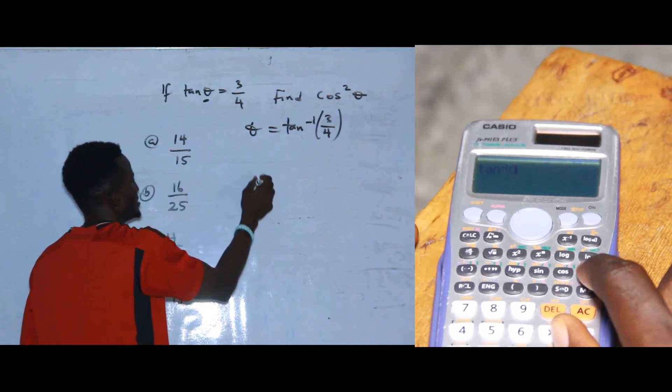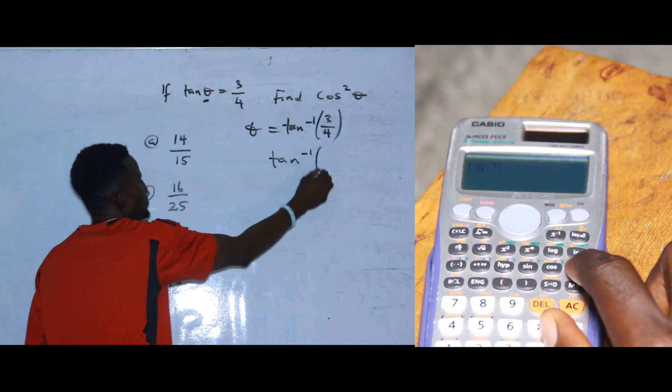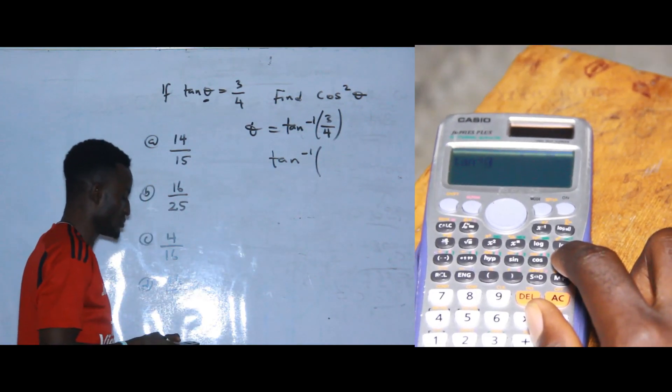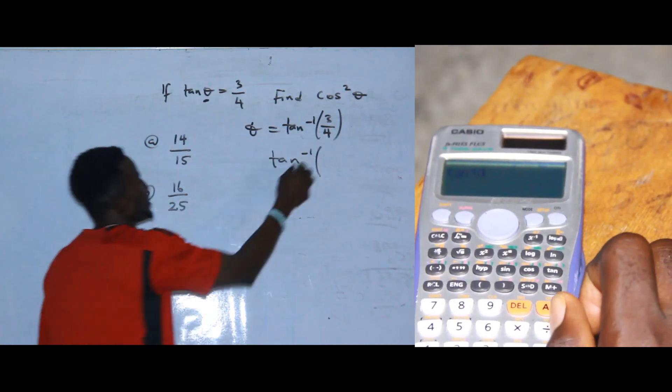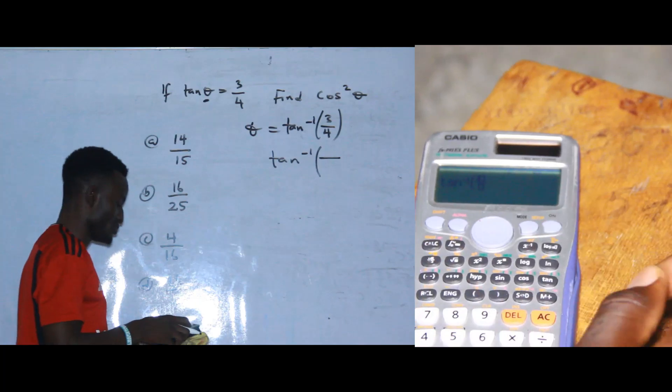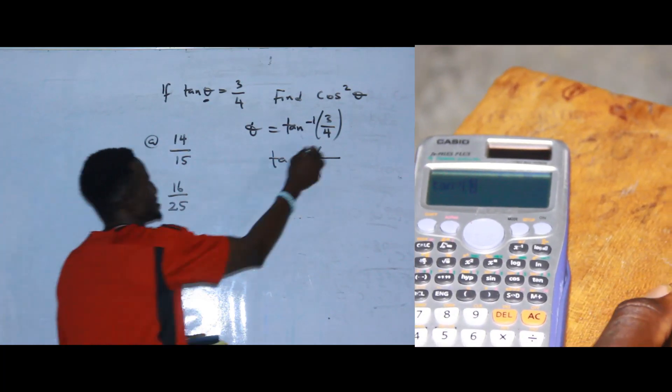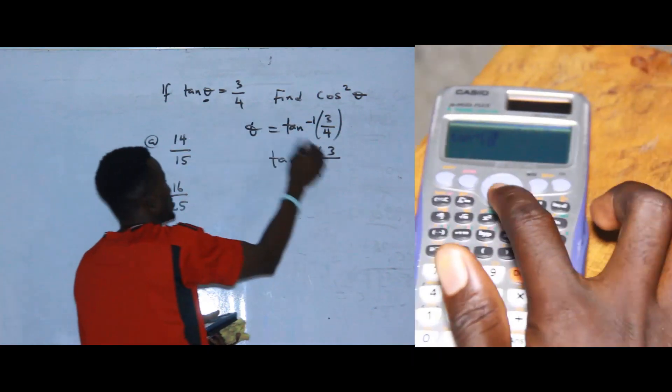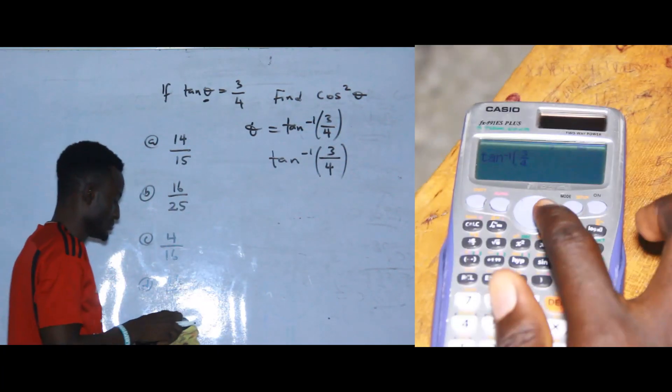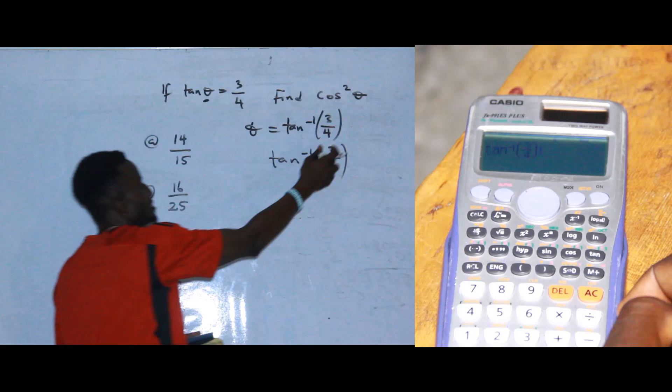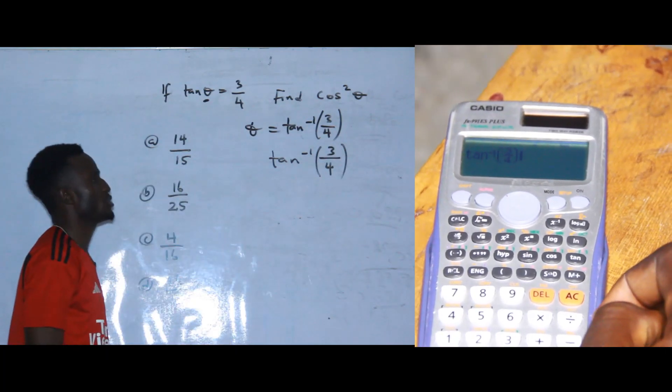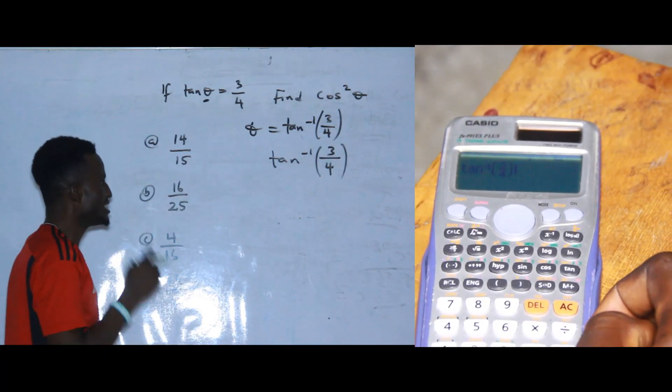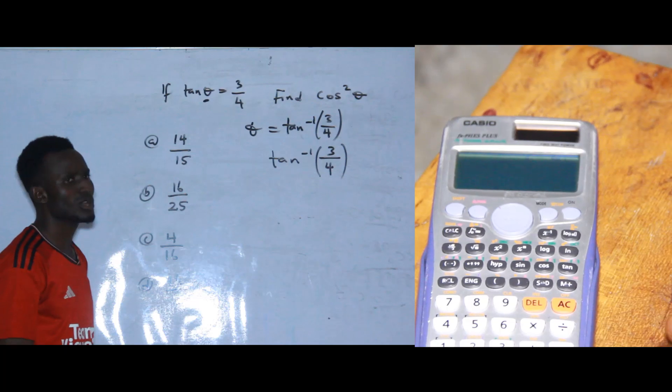When you press shift tan, it's going to bring something like this for you. When you press that, press your fraction button, then press 3 at the numerator, then come to your denominator press 4, then close the bracket. Come to this place and close the bracket.